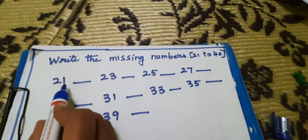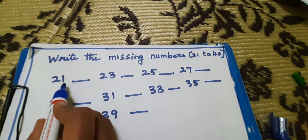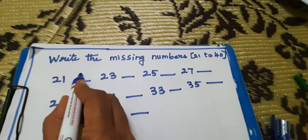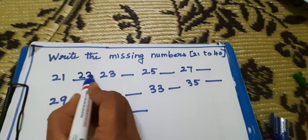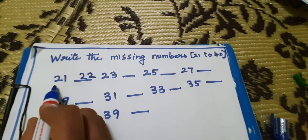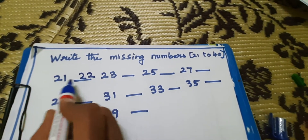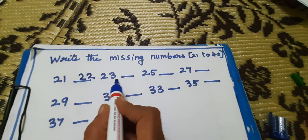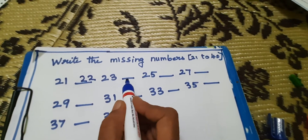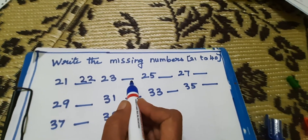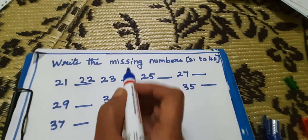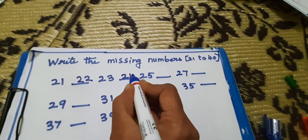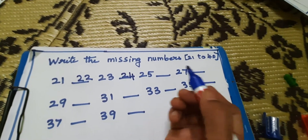21, 21. 22, 22. 23, 23. Then 24, 24. Write the missing numbers.